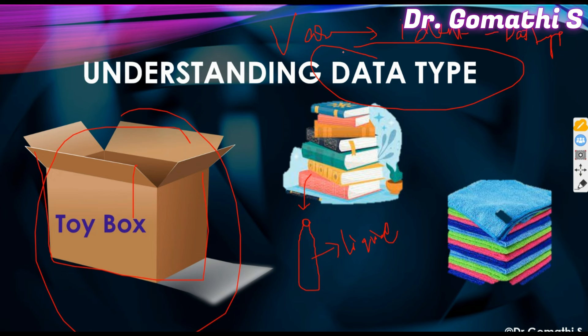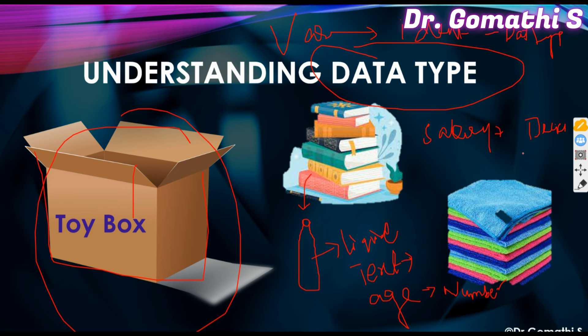For example, if you want to store an employee name or student name, it should be in text format. If you are storing the age of a student, it should be in number (integer) format. If you are storing a salary, it should be in decimal format. If you are storing an employee image, it should be BLOB — Binary Large Object data. You have to declare what type of data you are going to store.